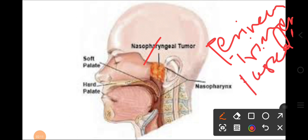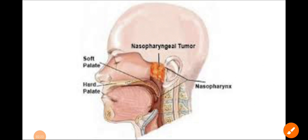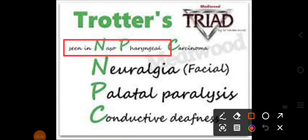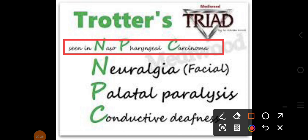It also invades the pterygoid spaces, which causes palatal immobility. You can memorize these using a mnemonic seen in nasopharyngeal carcinoma: 'N' helps to memorize neuralgia, 'P' in pterygoid helps to memorize palatal paralysis, and 'C' in carcinoma helps to memorize conductive deafness.